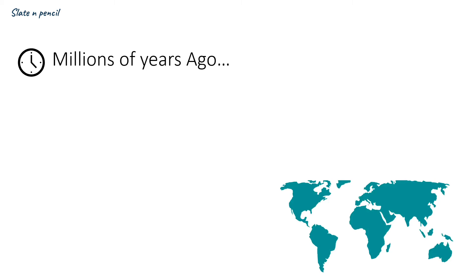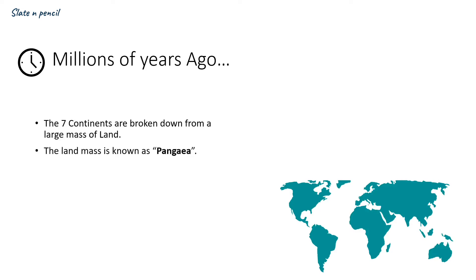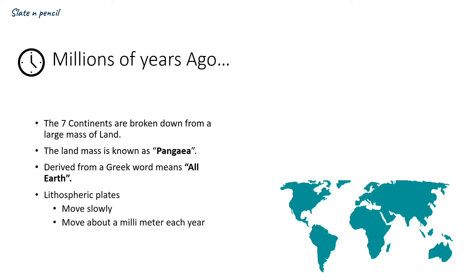Some scientists believe that millions of years ago, the seven continents — also known as lithospheric plates — broke down from a large mass of land. The map that we see today is actually broken down from a large landmass called Pangaea, which is a Greek word meaning 'all earth.' Lithospheric plates move slowly, about a millimeter each year, which is why you cannot feel it.